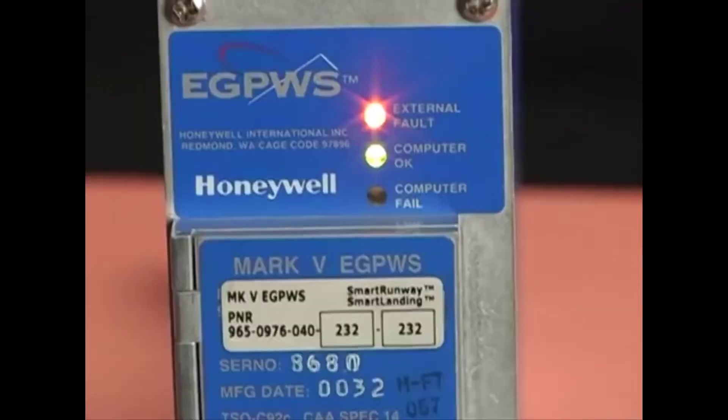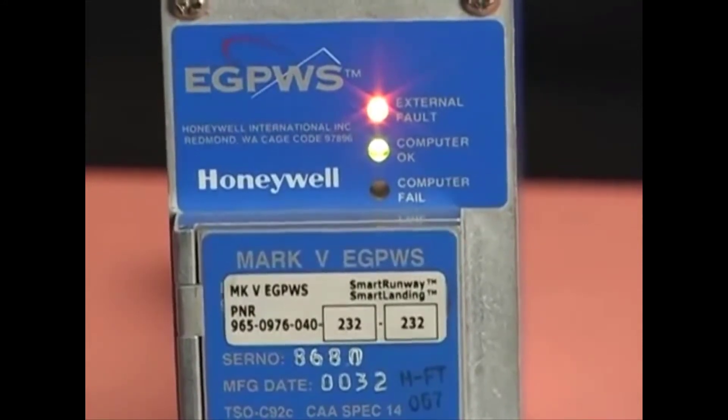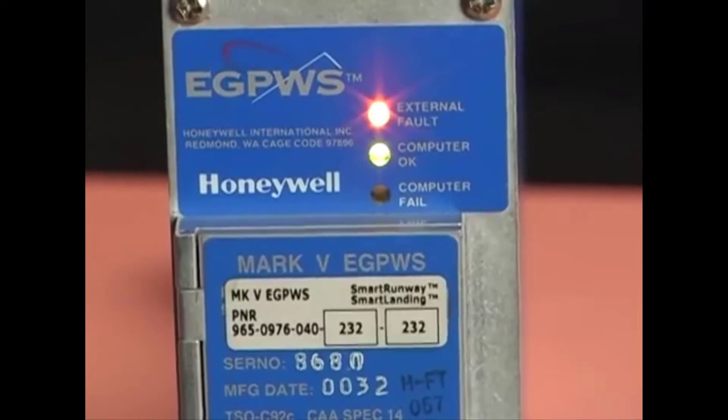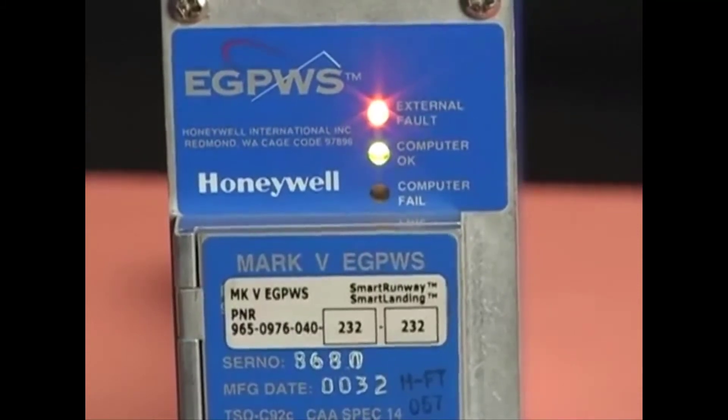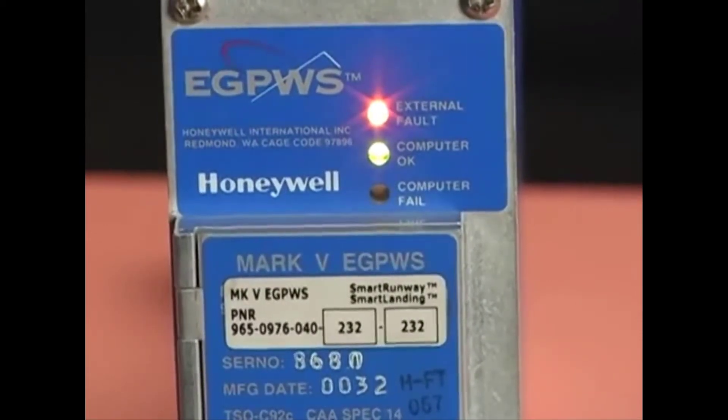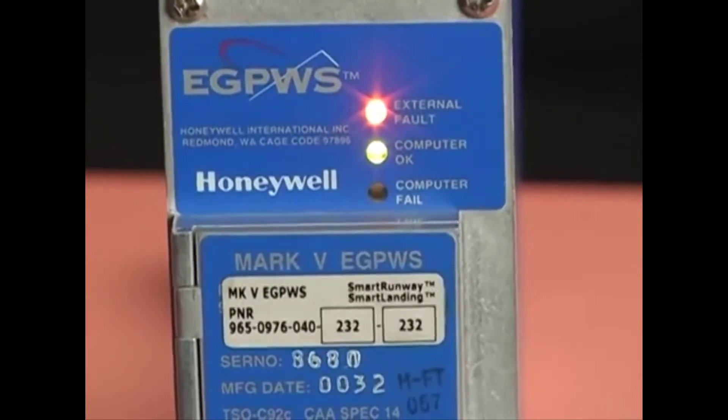Troubleshooting begins with the three LED status indicators on the front panel of the Enhanced Ground Proximity Warning computer. The green Computer OK LED indicates that the eGPWC is operating correctly. The yellow External Fault LED indicates a problem with something outside the eGPWC, such as an external sensor, a system, or wiring.